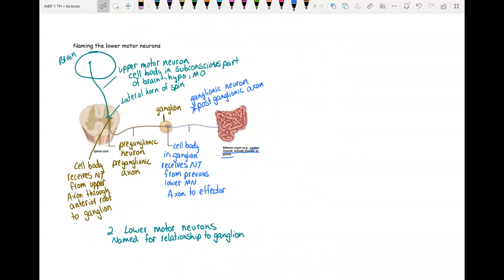So there's the basics of how autonomic is set up. You have one upper motor neuron from the brain to the spine, then you have two lower motor neurons to get from the spine to the effector with a ganglion where the two lower motor neurons synapse.